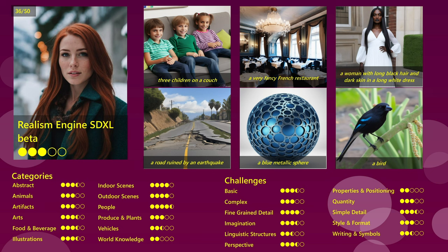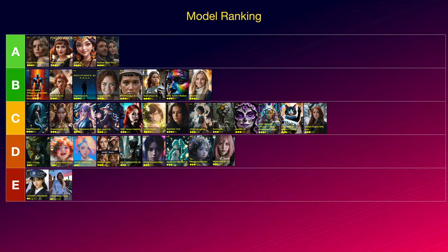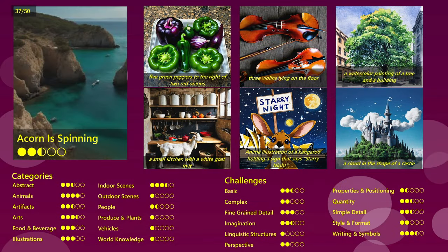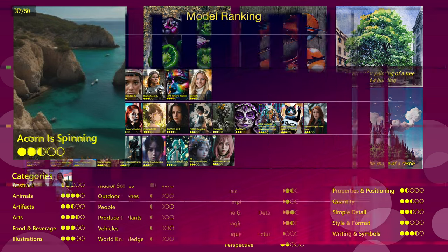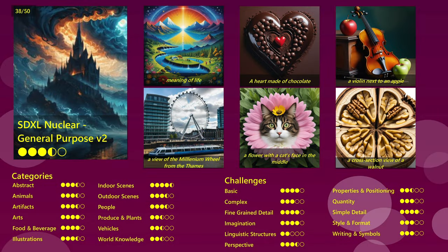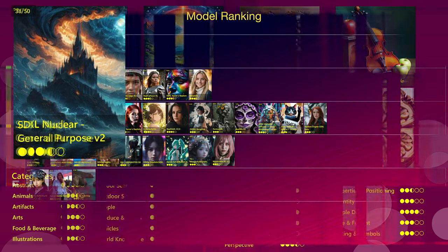Now here comes the Realism Engine SDXL, which is still declared as Beta, and it showed a solid performance over most categories and challenges, doing especially well in rendering people. Quite good for a Beta, so it's going into C. Next comes Acon is spinning, which took me some time and tweaking before I could get anything meaningful out of it. Maybe it's my fault, but I wasn't convinced with its quality in most aspects, so I'm putting it into E. Then there is the SDXL Nuclear General Purpose V2 model, outperforming at indoor scenes, but also very convincing in most other categories and challenges, with a reliable high quality. So it's going into B.